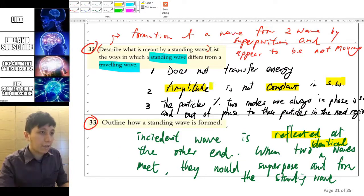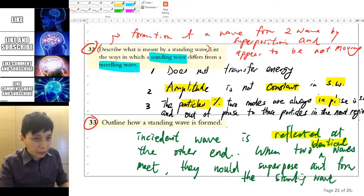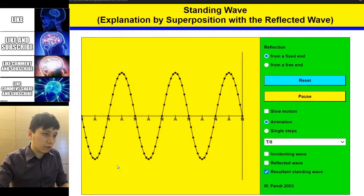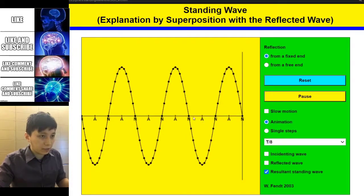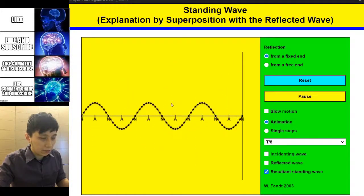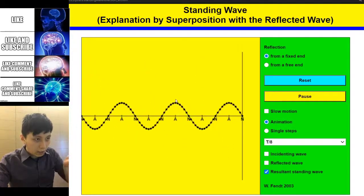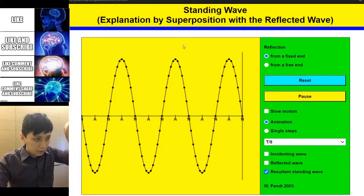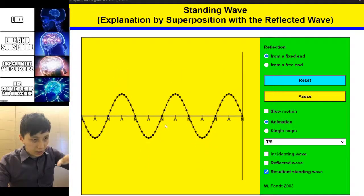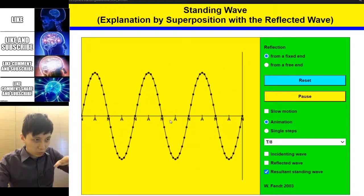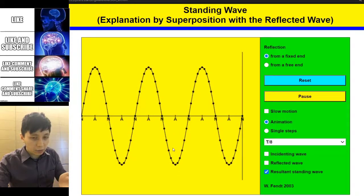We can see that the particles between two nodes will always be in phase in the standing wave. And that is to say, if you look at the animation again, for example between this one, all right, on my cursor, they are always going now going up and come back down. And so all these particles between these two nodes are always in phase.